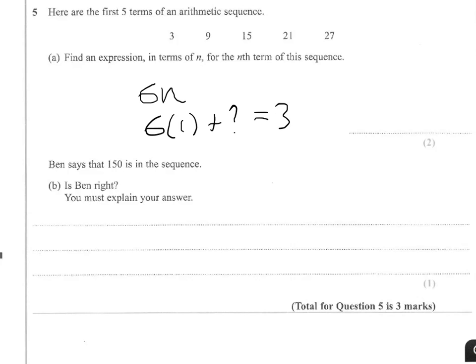So 6 times 1 is 6, so 6 plus minus 3 will give me 3. So this tells me then that the nth term must be 6n minus 3.